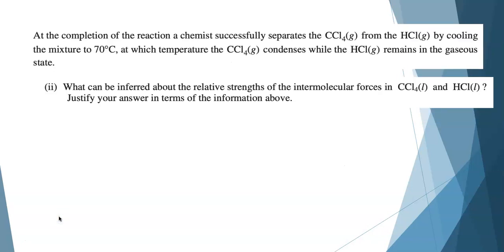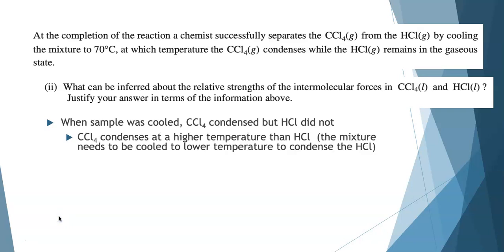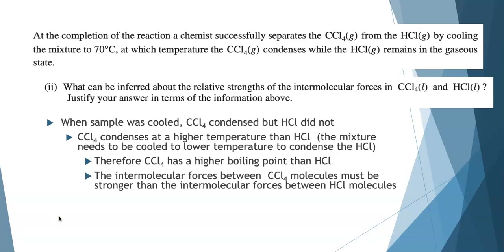What can be inferred about the relative strengths of the intermolecular forces in carbon tetrachloride and hydrogen chloride? Justify your answer in terms of the information given. The fact that carbon tetrachloride condenses at 70 degrees but HCl needs to get cooler tells us: when the sample was cooled, carbon tetrachloride condensed but HCl did not. Carbon tetrachloride condenses at a higher temperature than HCl, which means carbon tetrachloride would have a higher boiling point. The temperature at which it condenses if you're cooling it is the temperature it would boil at if you were warming it.